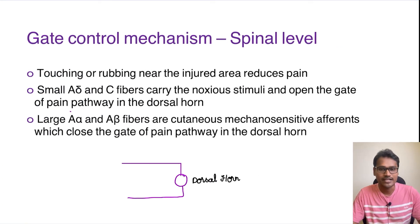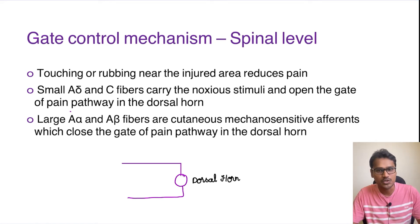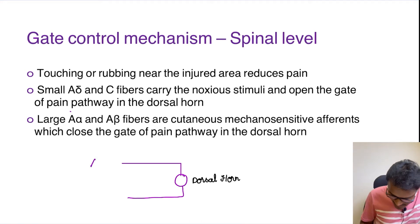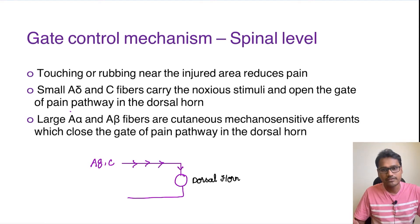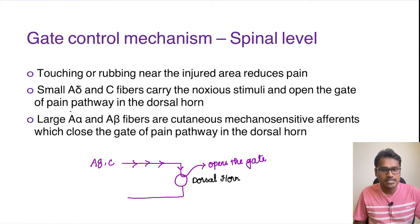The gate control mechanism acts at the spinal level. Most of us would have experienced this simple phenomenon: whenever there is an injury, the first thing we do is shake our hand, or sometimes we rub around the region of the injury, which helps us to reduce the pain level. Pain is carried via A-delta and C fibers. They go to the spinal cord and activate the pain pathway, which is also called as opening up of the gate mechanism of pain.